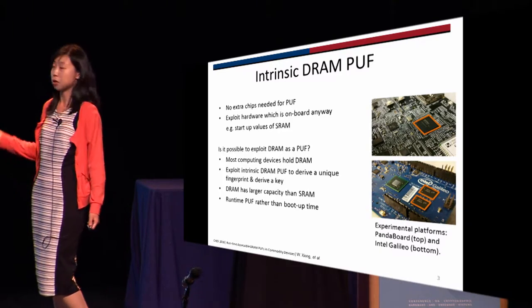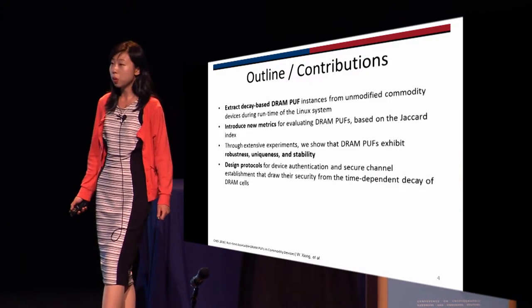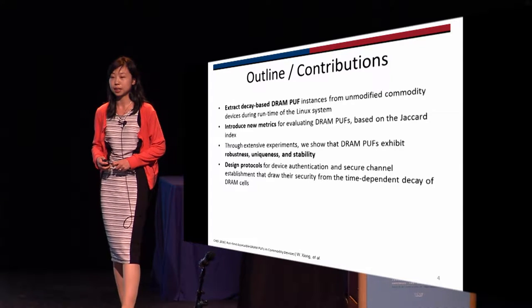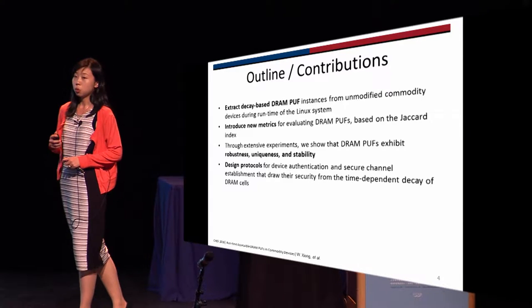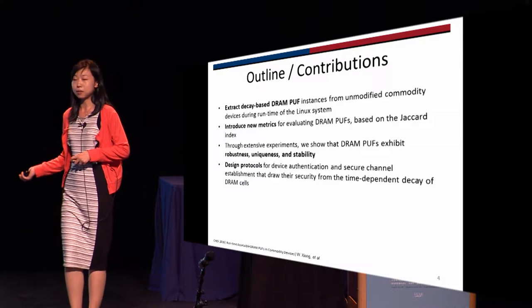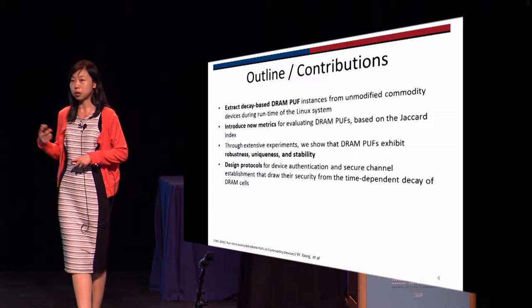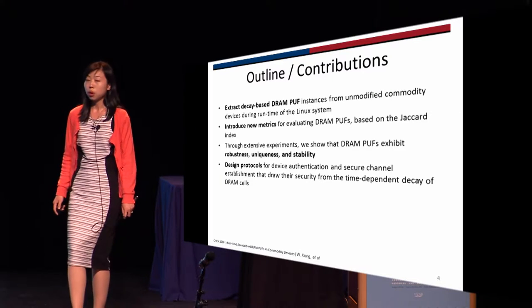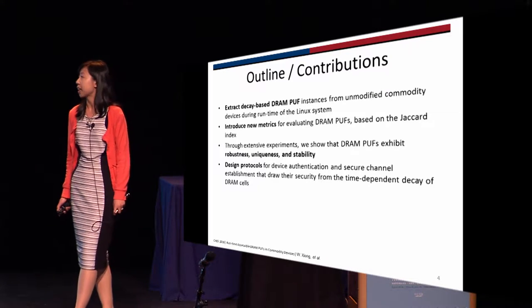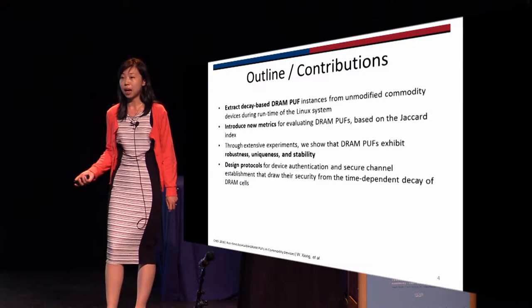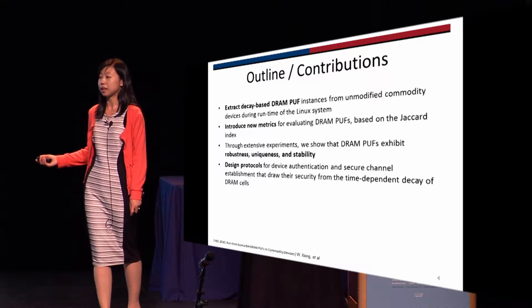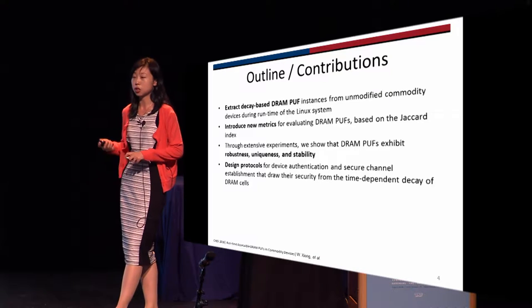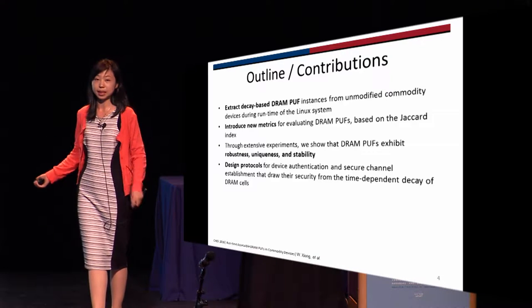So we want to have an intrinsic DRAM PUF. In our work, we are able to extract decay-based DRAM PUF from unmodified commodity devices at Linux system runtime, which means we get the device and can use it as a DRAM PUF — we are not using FPGA and we don't need to modify the hardware. Based on our experiments, we introduce new metrics based on the Jaccard index, and through that we show the DRAM PUF has robustness, uniqueness, and reliability. Based on this, we introduce new protocols for device authentication and secure channel establishment using the time-dependent decay of DRAM.